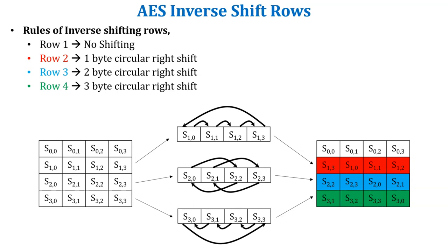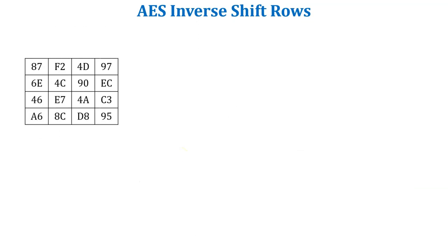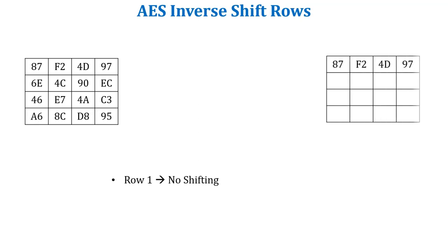So these are the rules of inverse shifting rows in AES. Now let's take one example and perform inverse shift rows on this state array. As per the rules, the first row is performed with no shifting, so it means the first row is as it is.